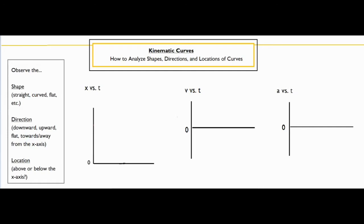There are a lot of different combinations of things that you may have to do, but to understand every kinematic graph you want to understand what each of the shapes, directions, and locations mean and what they represent as far as the motion goes. We're going to take a look at each of these types of graphs and talk about how all of those things relate to the meaning of the actual motion itself.